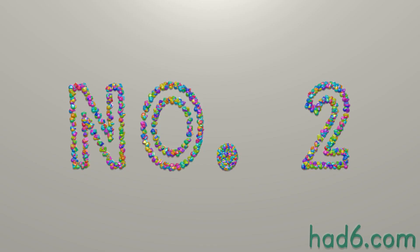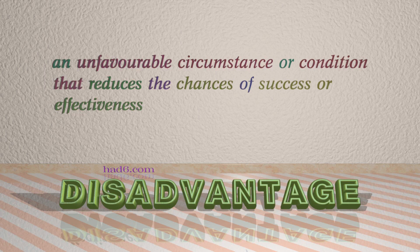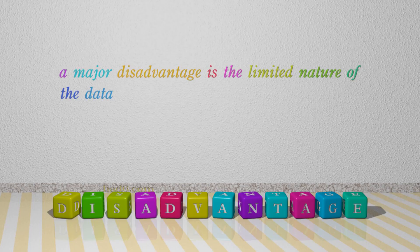Number 2: Disadvantage. Which means: an unfavorable circumstance or condition that reduces the chances of success or effectiveness. For example: a major disadvantage is the limited nature of the data.